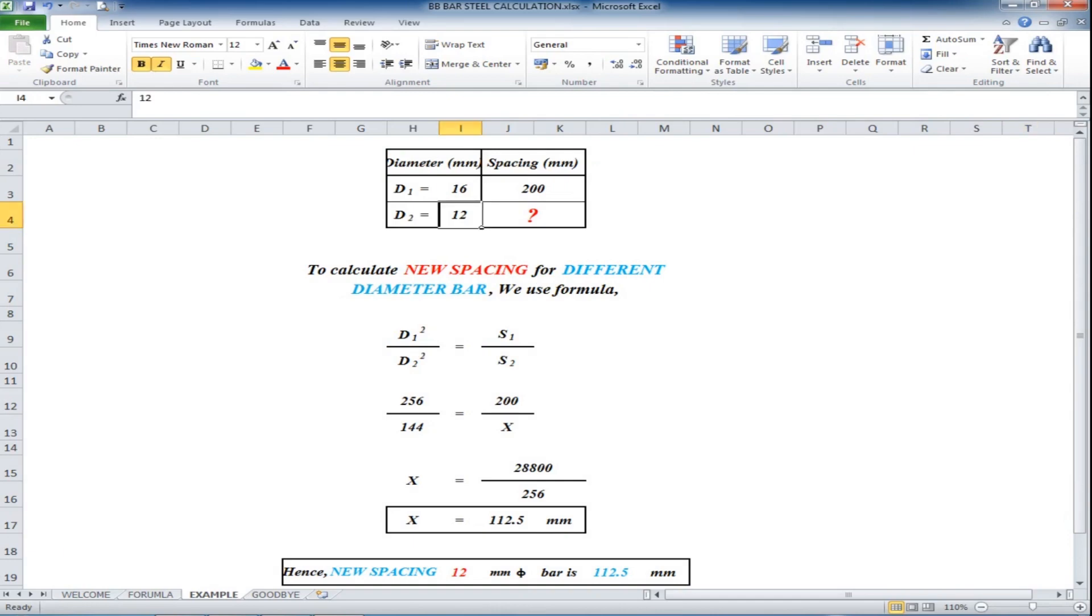Let us calculate the new spacing for 20mm diameter bar and press enter. This will automatically change the spacing. Now, the new spacing for 20mm diameter bar is 312.5mm.